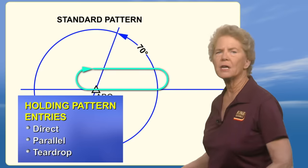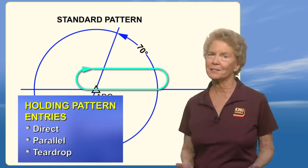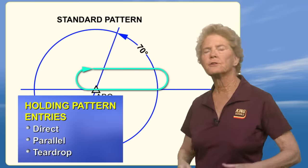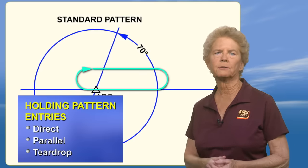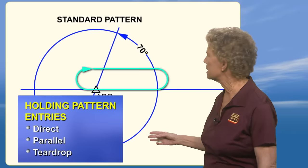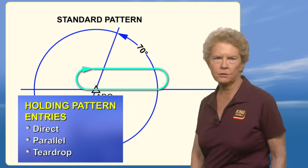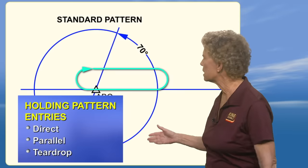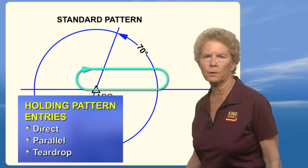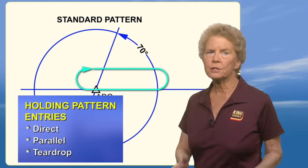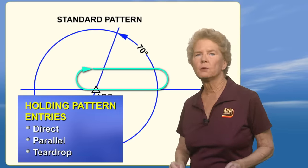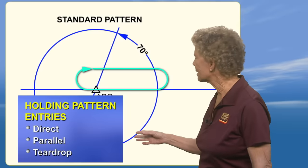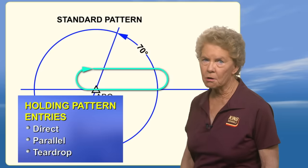These entries are referred to as FAA recommended, which might lead some folks to think that they're optional. Well, the Airman Certification Standards, the ACS, which are the standards for your knowledge and practical tests, require that you know the recommended entries and use an entry that ensures you remain within the holding pattern airspace. The FAA has determined that these three types of entries will keep you within the holding pattern airspace. If a pilot chooses some other entry, they need to be able to prove they have stayed in the holding pattern airspace. So it's a good idea to treat these recommended entries as a very strong recommendation.